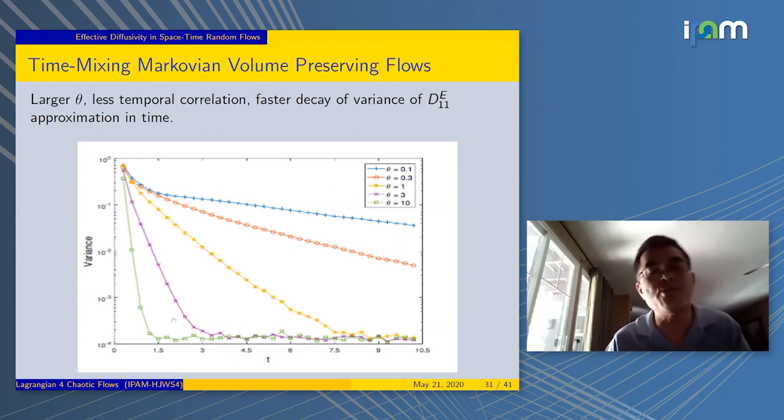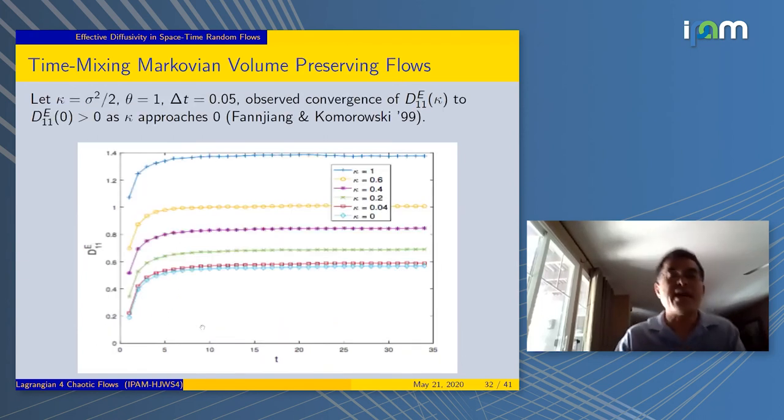When you do Monte Carlo, you want the variance to be under control, especially if it's small. That's good news. For example, in this case, when θ is 10, among this group, the highest, you follow the green curve. By time 3, your variance is very small.